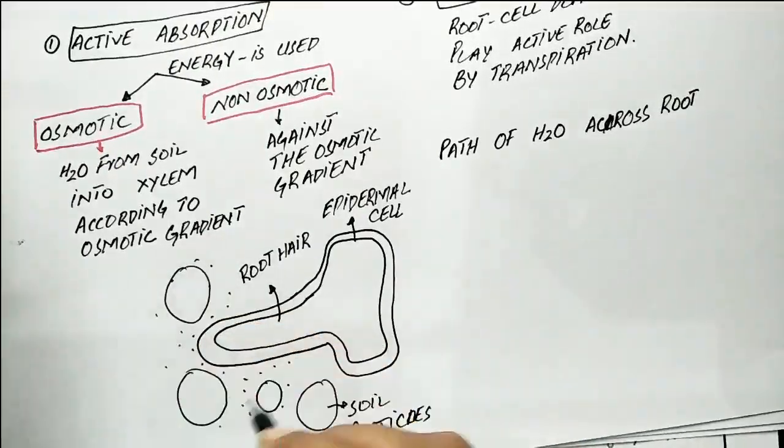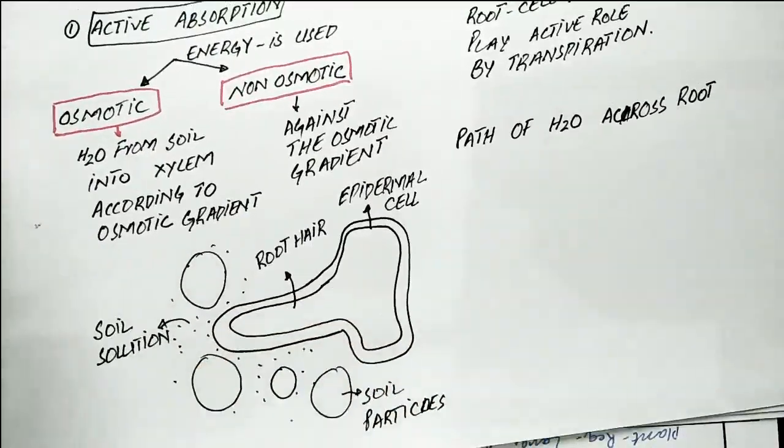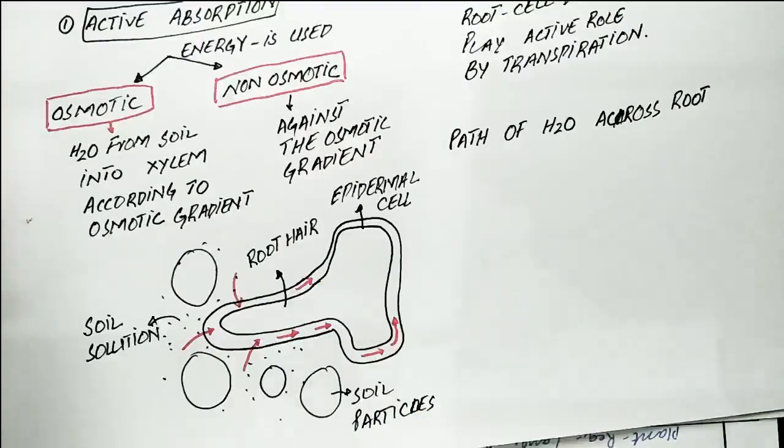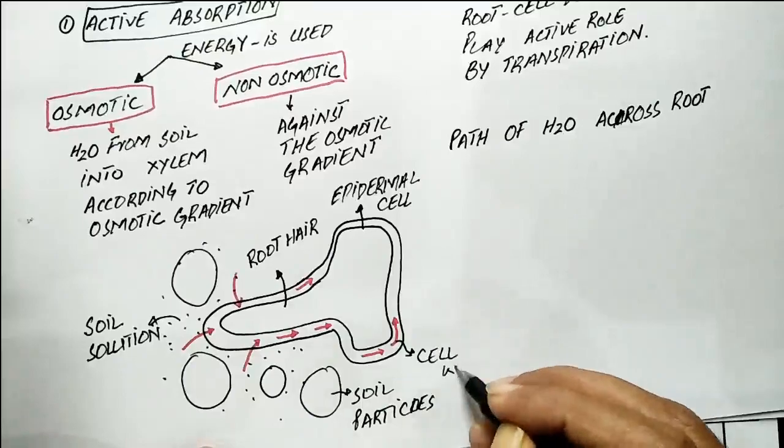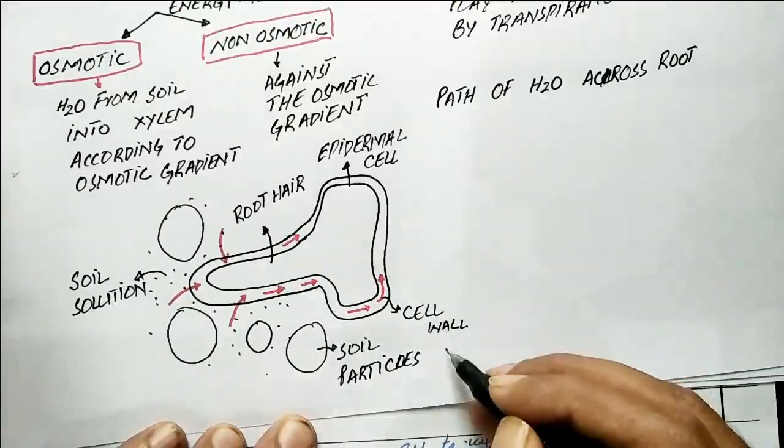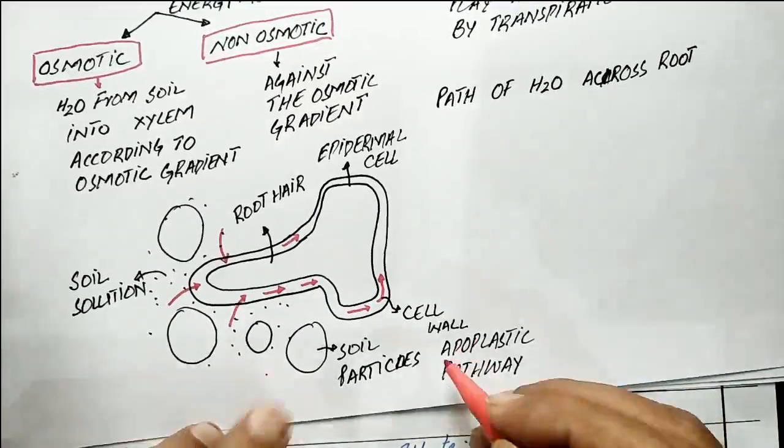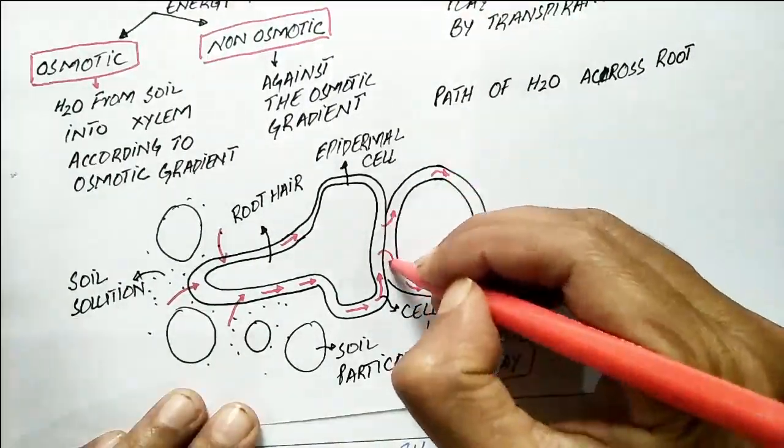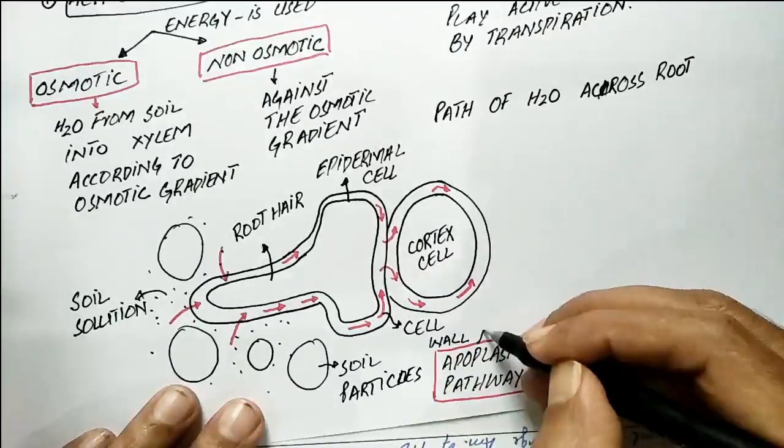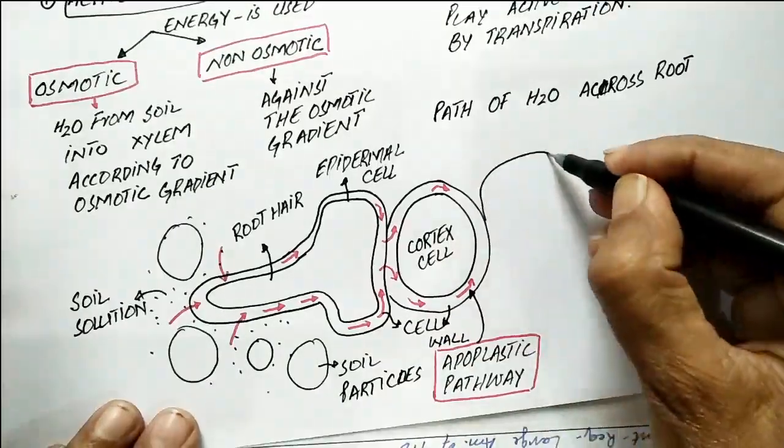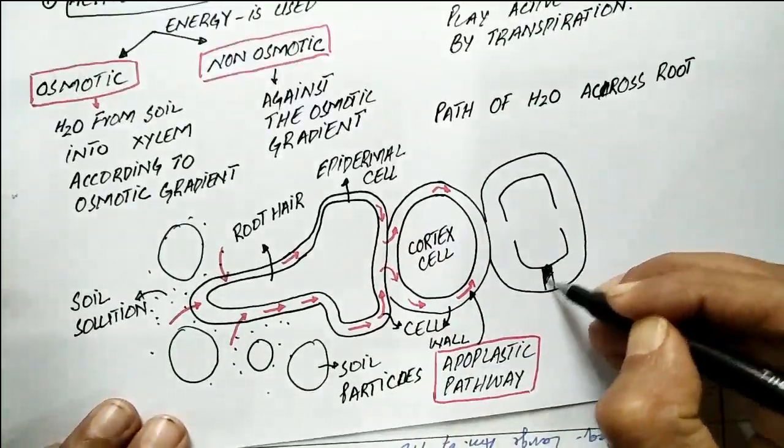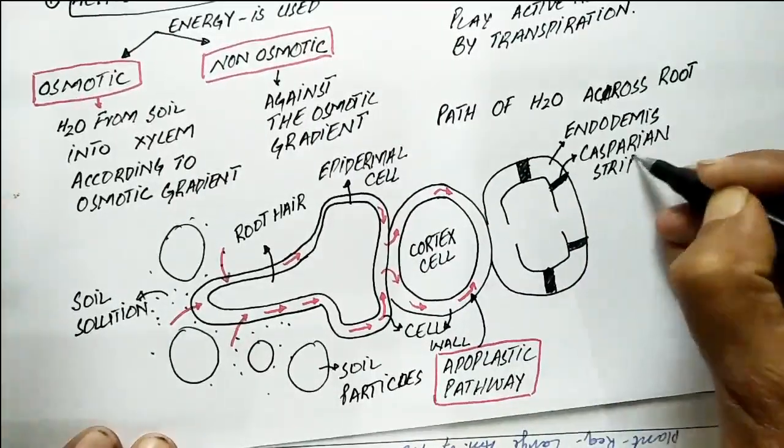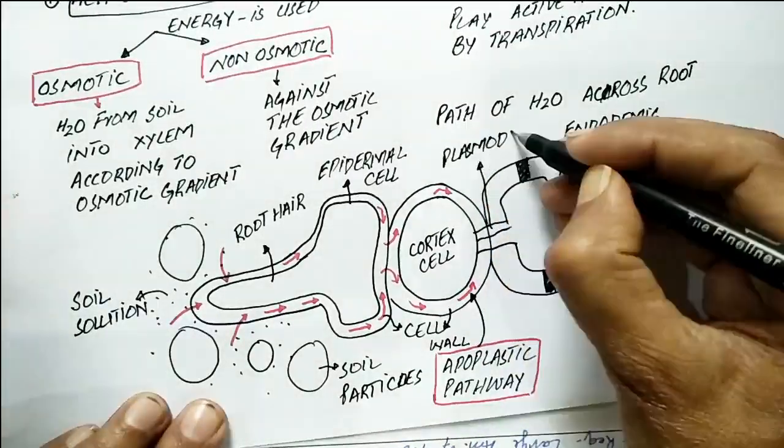Water enters from the soil into the root hair cells and moves through the cell walls of the root hair, epidermal cells, and cortex. But when it reaches the endodermis, due to the presence of casparian strips that are impermeable to water, the water must enter into the cytoplasm. Through plasmodesmata, water enters from cortex to the endodermis.